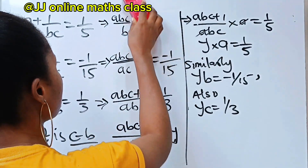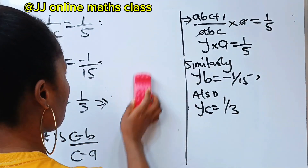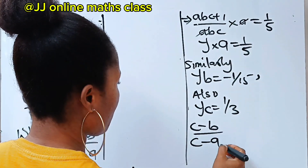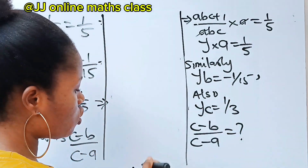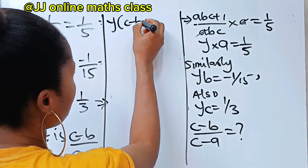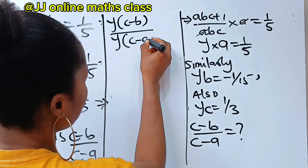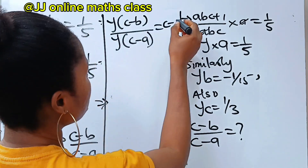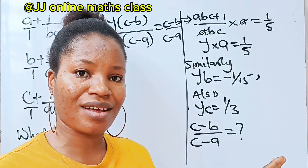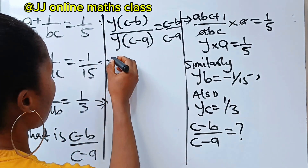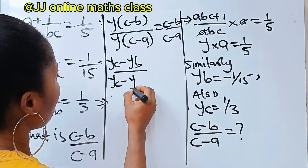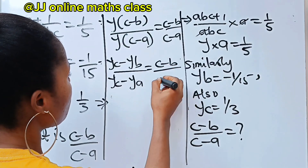Now, let's go back to our question. The question asks for c minus b divided by c minus a. We multiply the numerator and denominator by y, giving y(c minus b) divided by y(c minus a). Opening the bracket, we have yc minus yb divided by yc minus ya, which equals c minus b over c minus a.